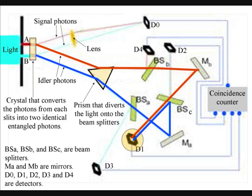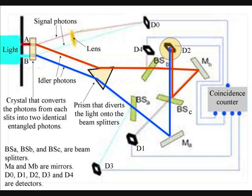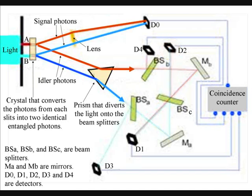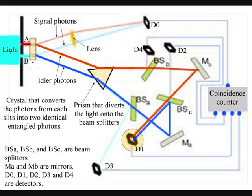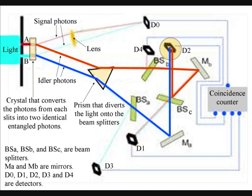But if the idler photon is detected at detector D1 or D2, it might have come from either slit A or B. Therefore, which detector receives the idler photon either gives information as to whether the signal photon with which it is entangled went through slit A or B, or implies that such information is not available. At detector D1 and D2, the information of which slit it went through has been erased.